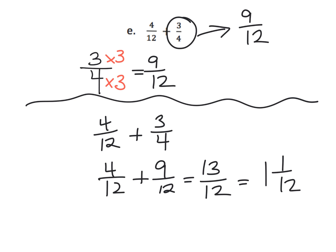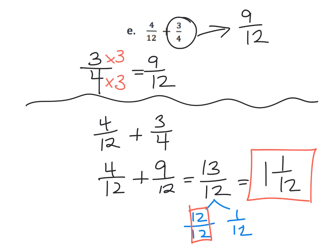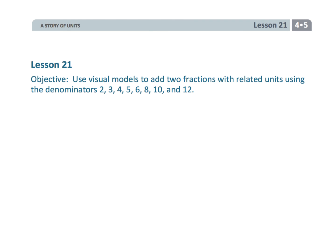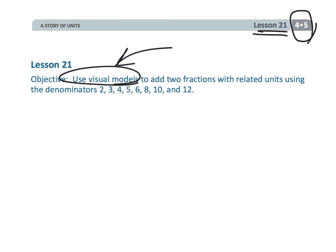Parents and teachers, how did we go from this improper fraction to this mixed number? Thirteen twelfths is twelve twelfths plus one twelfth, and twelve twelfths equals one whole, so we end up with one and one twelfth. That wraps up fourth grade module 5 lesson 21. Students are continuing to use those visual models, but we are starting to move away from them and toward the standard algorithm.